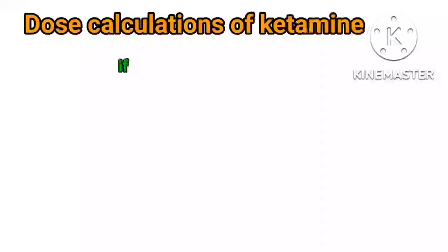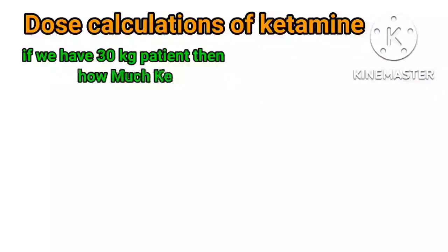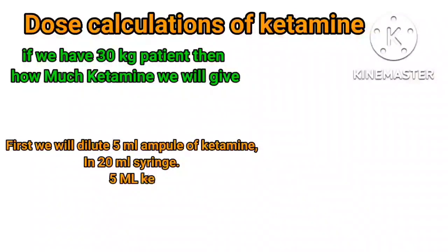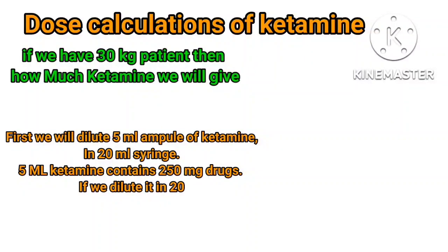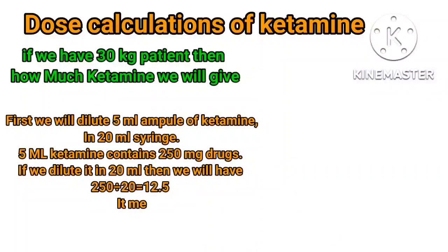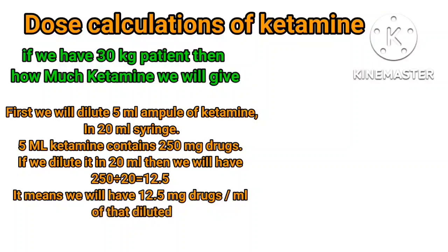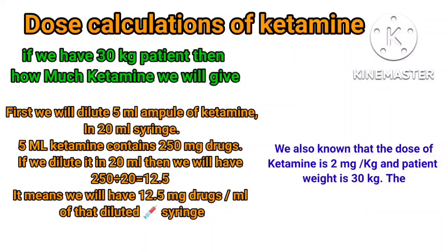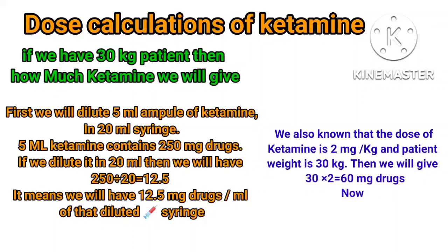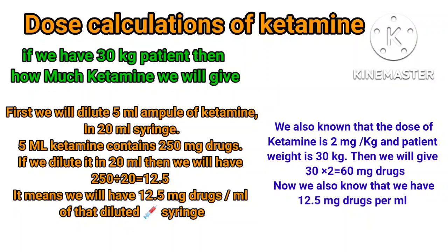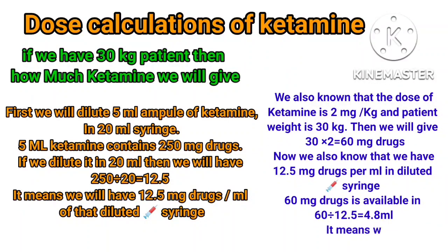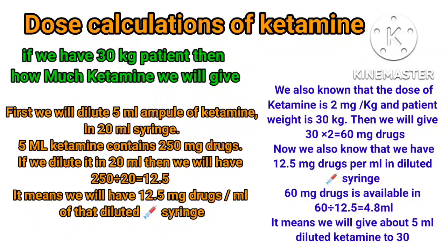Dose calculation of ketamine: If we have a 30 kg patient, how much ketamine will we give? First, we dilute a 5 ml ampoule of ketamine in a 20 ml syringe. 5 ml of ketamine contains 250 mg. If we dilute it in 20 ml, we get 250 divided by 20, which equals 12.5 mg per ml in the diluted syringe. The dose of ketamine is 2 mg per kg and patient weight is 30 kg, so 30 multiplied by 2 equals 60 mg. We have 12.5 mg per ml, so 60 divided by 12.5 equals 4.8 ml. It means we will give about 5 ml of diluted ketamine to a 30 kg patient.